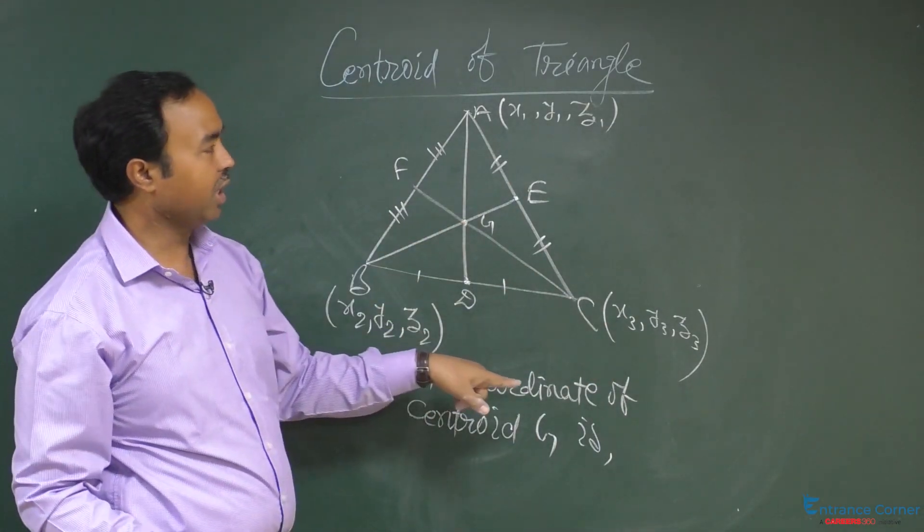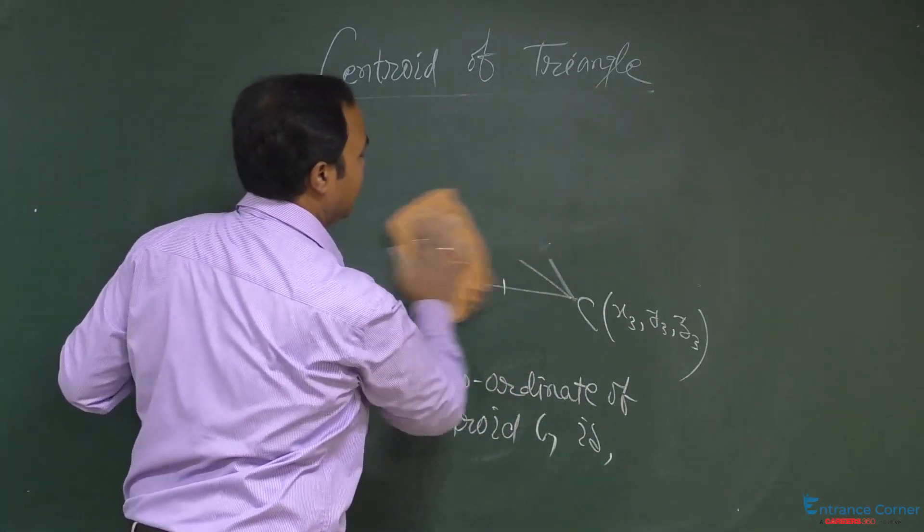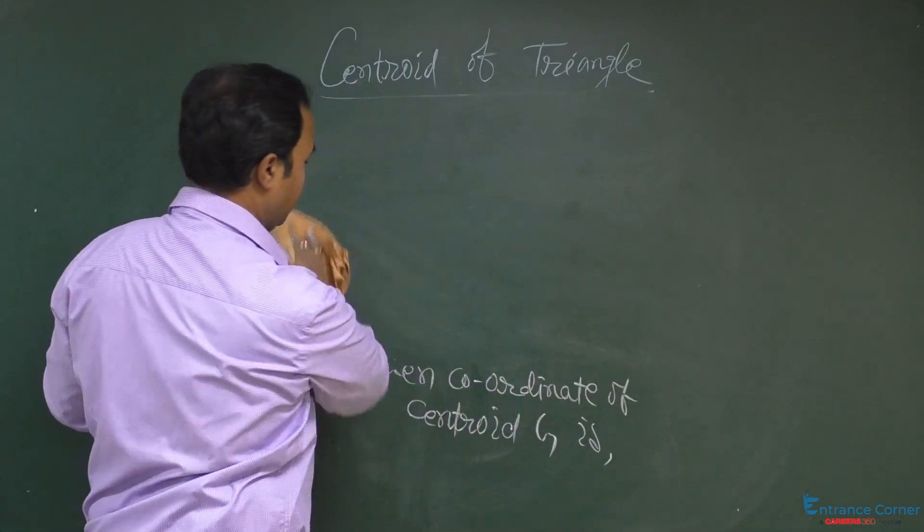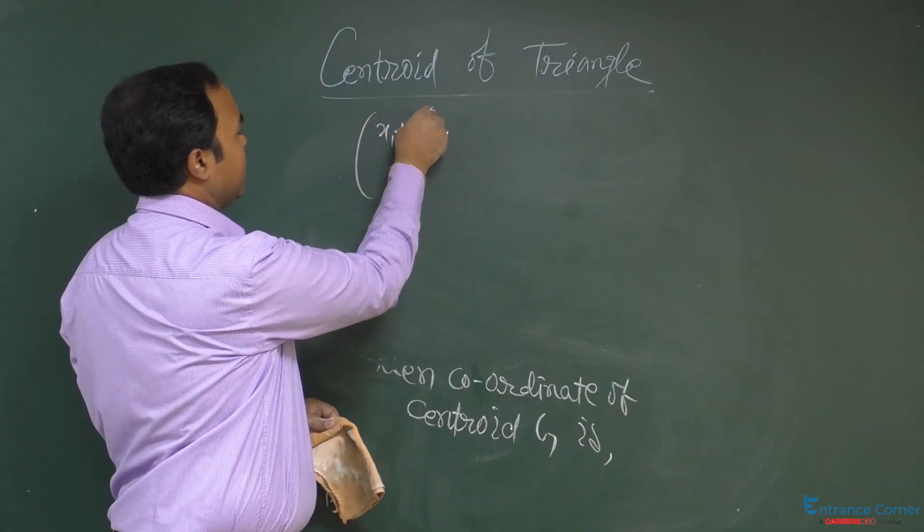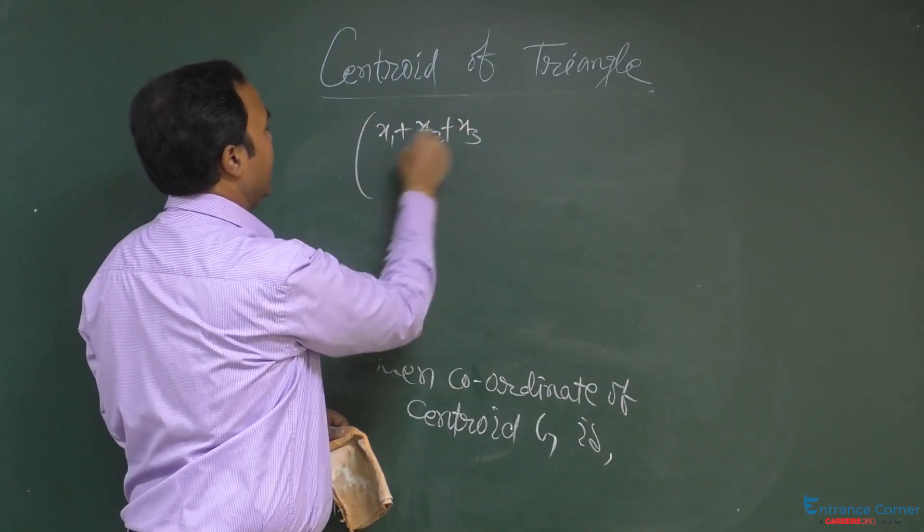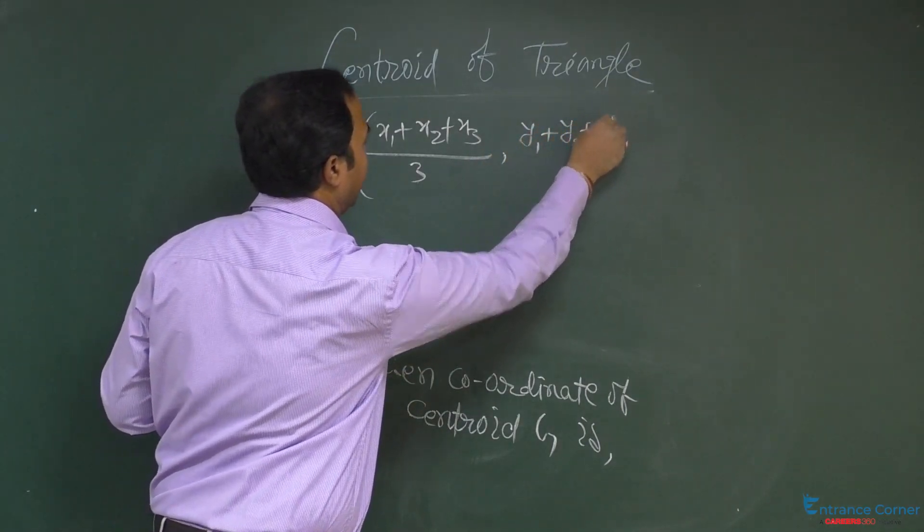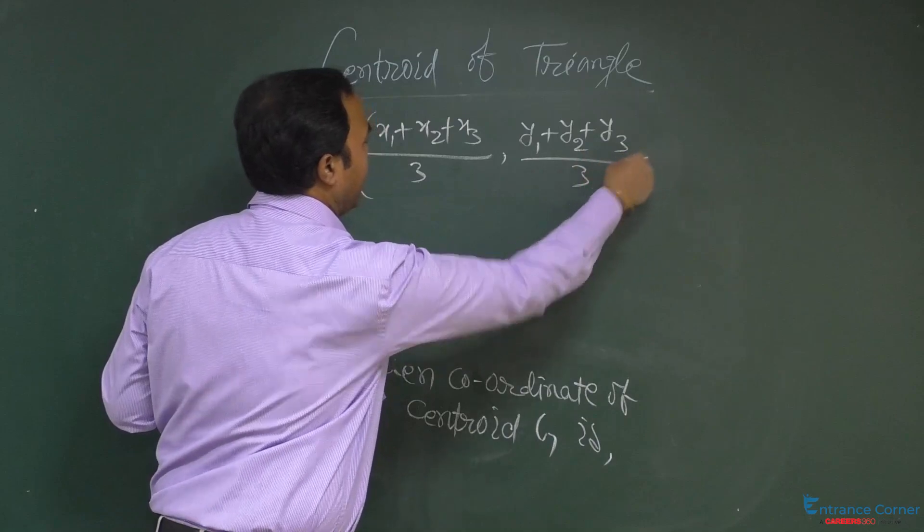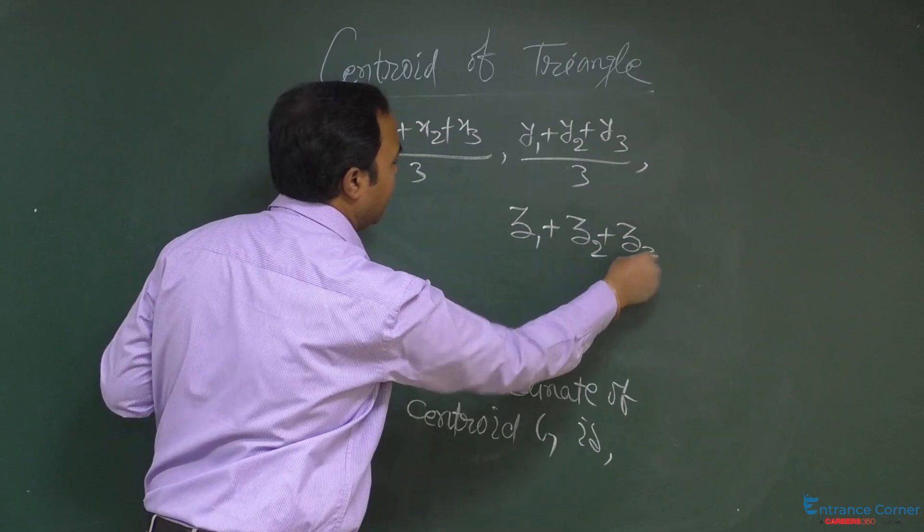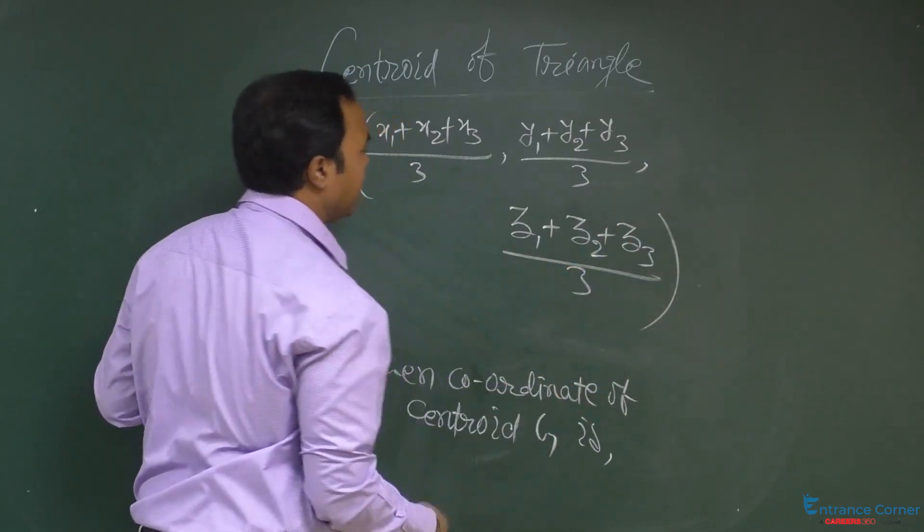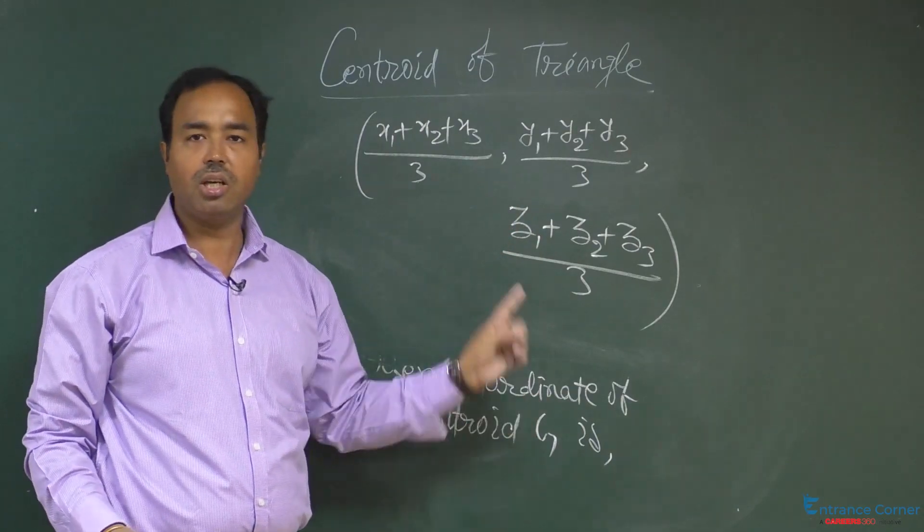So, the x coordinate of the point G is x1 plus x2 plus x3 divided by 3, y1 plus y2 plus y3 divided by 3 and z1 plus z2 plus z3 divided by 3. So, this is the coordinate, this is the formula for the centroid G of a triangle.